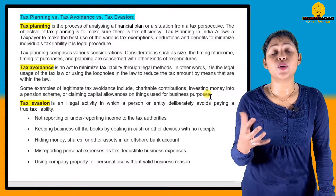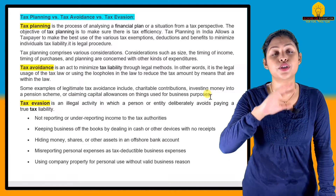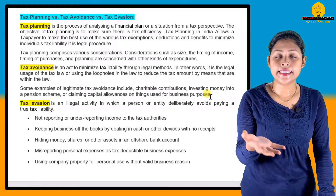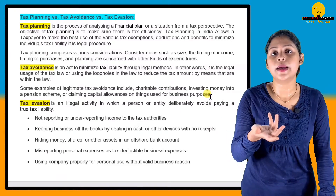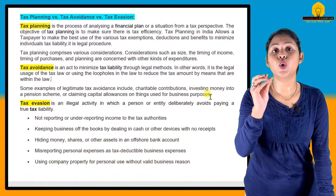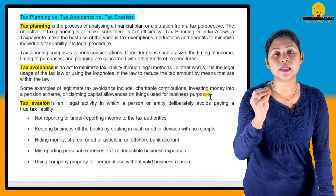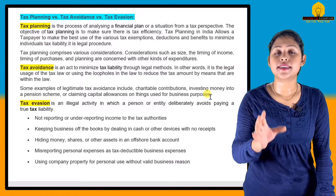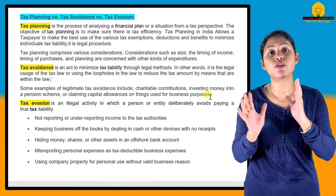For example, making a charitable contribution means your income is transferred as a donation. This reduces your taxable income. Through such legal provisions, you reduce your tax burden — this is tax avoidance. Tax avoidance is legal, as it operates within the law.